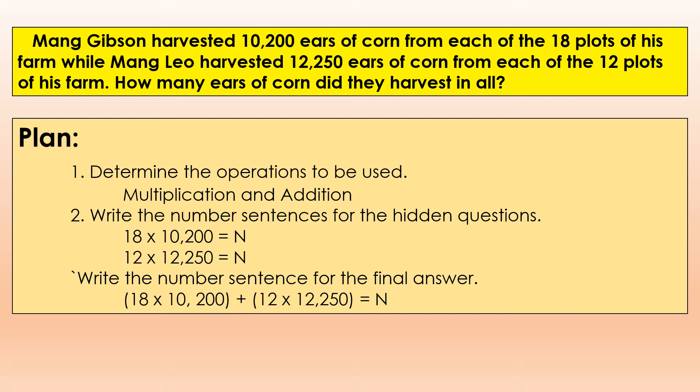Plan — determine the operations to be used. The operations that we are going to use are multiplication and addition. Number two, write the number sentences for the hidden questions: 18 times 10,200 equals N; and 12 times 12,250 equals N. Write the number sentence for the final answer: 18 times 10,200 plus 12 times 12,250 equals N.